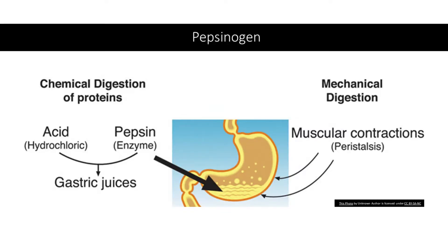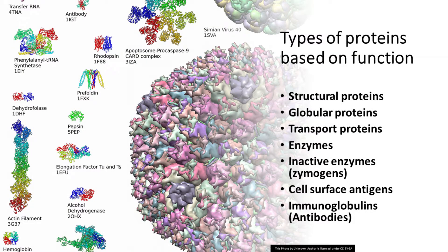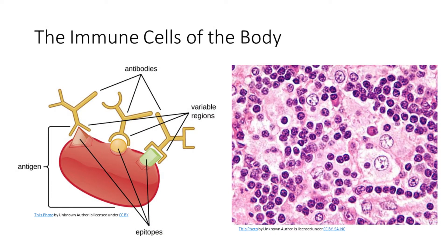Similarly, pepsinogen is found in the stomach and is activated by a lower pH or an acidic environment. You need to have a very clear foundation about what proteins are, what proteins do, and the different types of proteins: structural proteins, transport proteins, enzymes that increase the rate of reaction, and inactive proteins called zymogens. There are also proteins that act as receptor molecules on the cell surface. Your immune system is also made up of proteins — antibodies, commonly called immunoglobulins, are a type of protein, and surface antigens are proteins. Without proteins, all of these things cannot be made, and that is the reason why proteins are not used to provide energy.